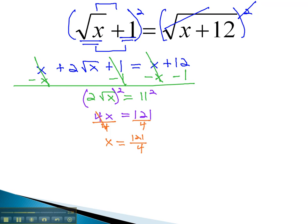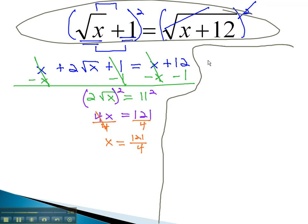We must not forget though that this problem had even roots. Whenever there's an even root, we do want to make sure we check our final answer in the original equation. The original equation was the square root of x, or 121 over 4, plus 1, equals the square root of x, or 121 over 4, plus 12.